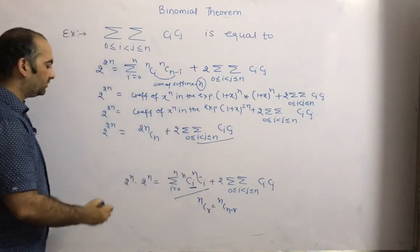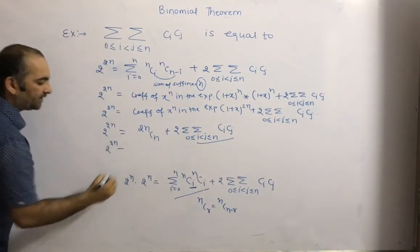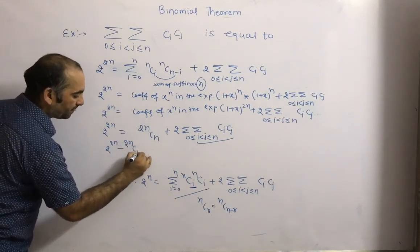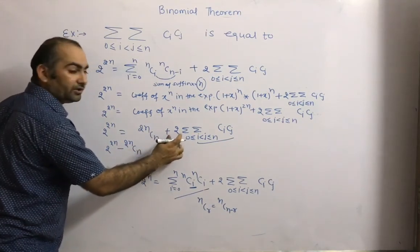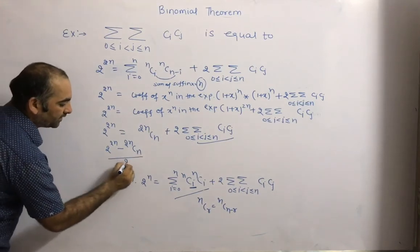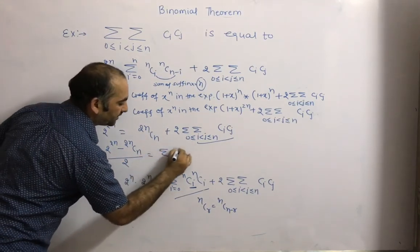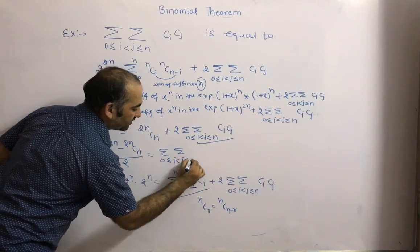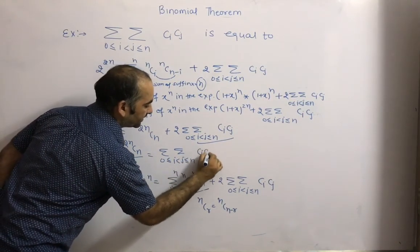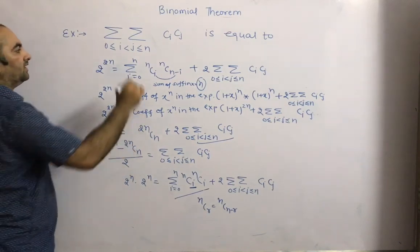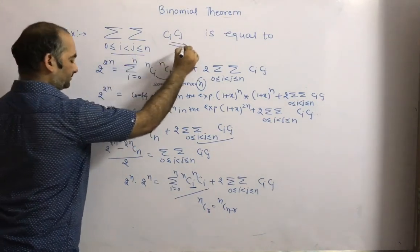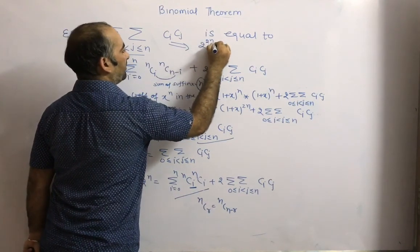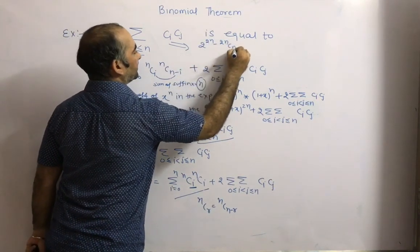Rearranging: 2^{2n} - 2nCn = 2 · sigma sigma 0 ≤ i < j ≤ n of nCi · nCj. Dividing both sides by 2, the answer is (2^{2n} - 2nCn) / 2. This is the final answer.